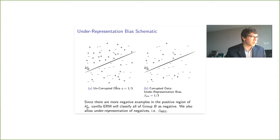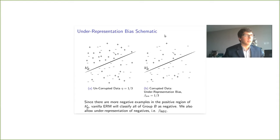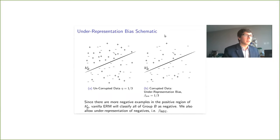Here's what the data looks like after the underrepresentation bias process. The left side is the uncorrupted data and the right side has much fewer positives. Note that this beta-positive parameter is uniform across the input space, so there are fewer positives both below and above the hyperplane. Because there are now fewer positive examples throughout the entire region of the input space for group B, plain ERM will just classify all of group B as negative. In the most general bias model for underrepresentation, we also allow underrepresentation of negatives.